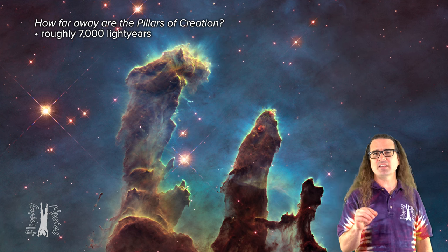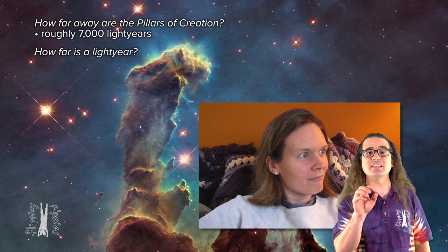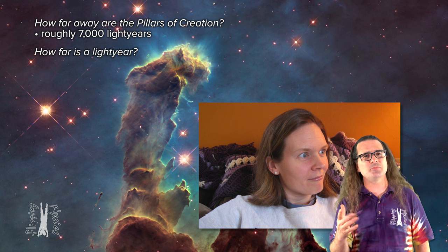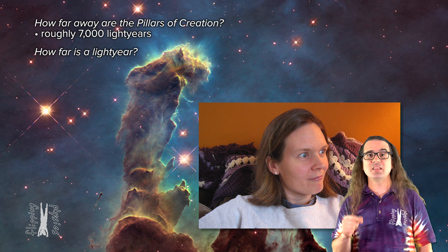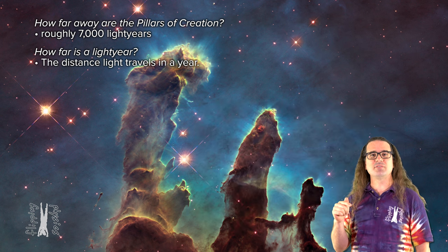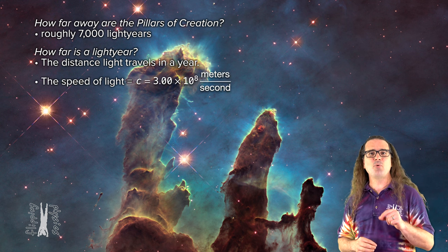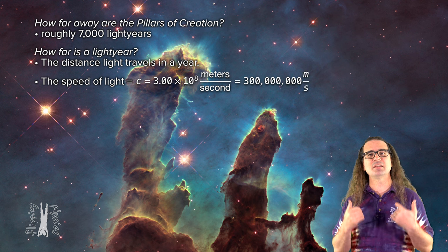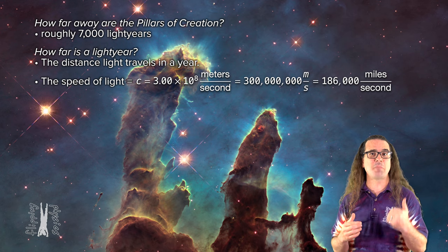First, you need to understand how far a light year is. I know, a light year is a distance measurement, not a time measurement. It sounds a bit strange because the word year is in there. However, trust me, a light year is a distance. Specifically, a light year is the distance light travels in a year. Light travels at roughly 3.00 times 10 to the 8th meters per second or 300 million meters per second, which is 186,000 miles per second.